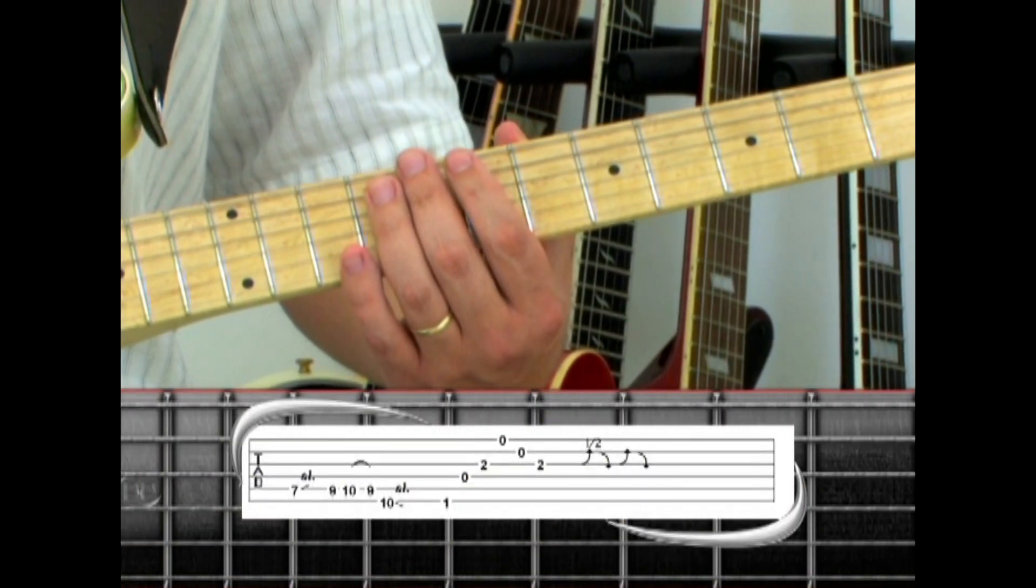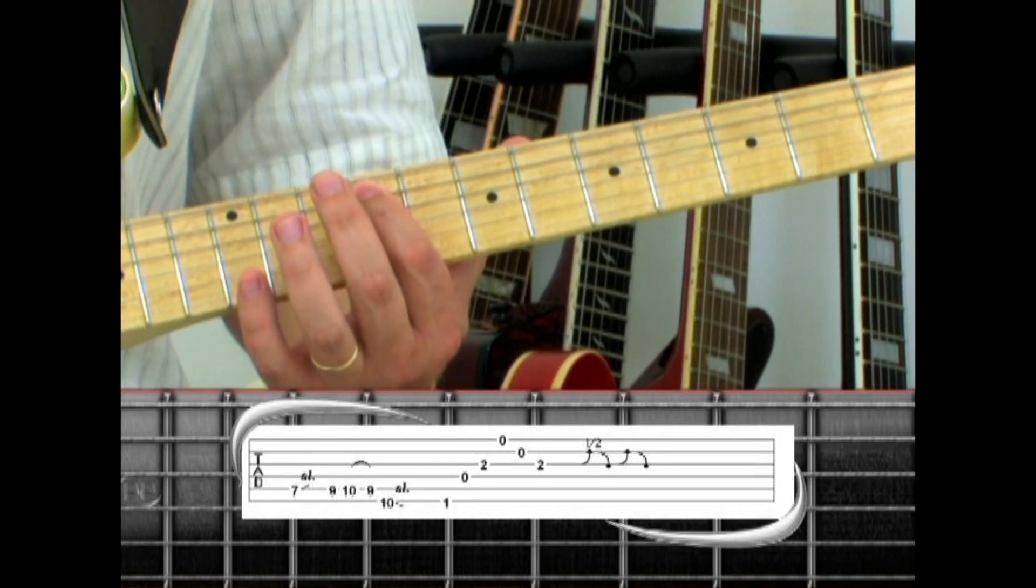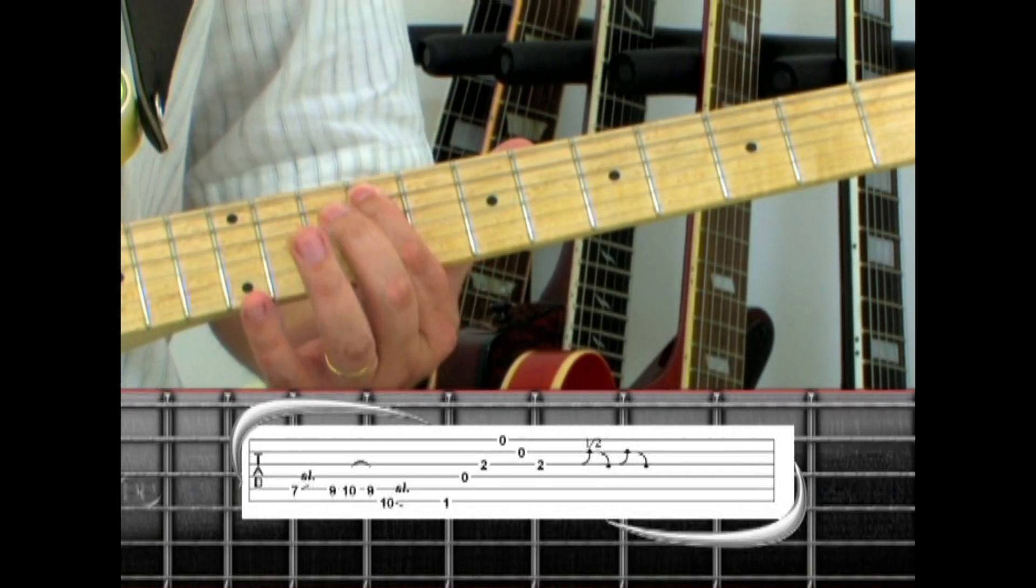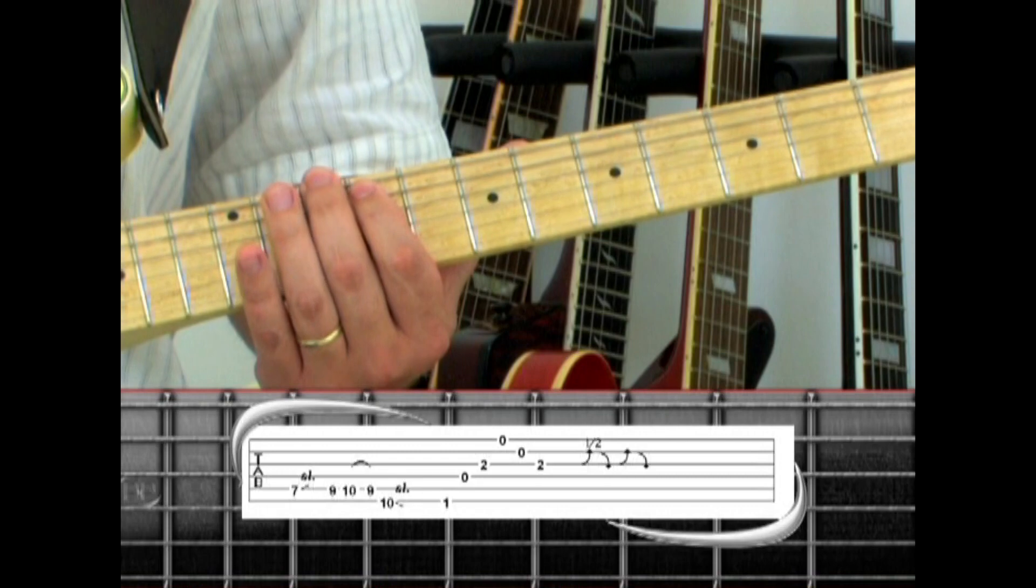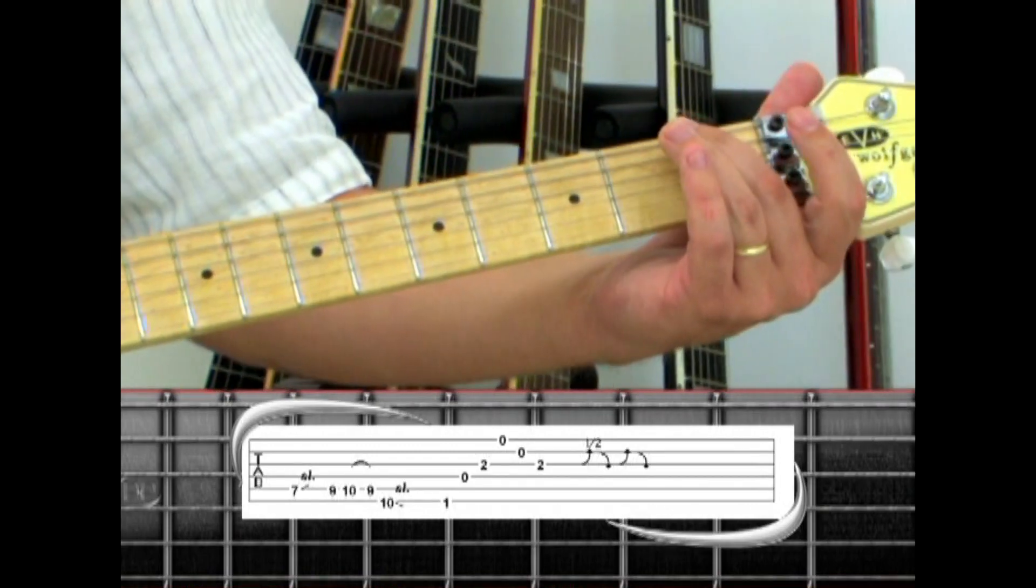Start on the 5th string 7, slide up to 9, 10, pull to 9, 6th string 10, slide down to the D minor 6 slash 9 chord.